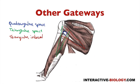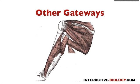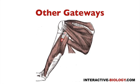The triangular space has a superior border of teres minor, inferior border of teres major, and a lateral border of the long head of the triceps. The triangular interval is a little different: its superior border is the teres major muscle, medial border is the long head of the triceps, and lateral border is the shaft of the humerus.